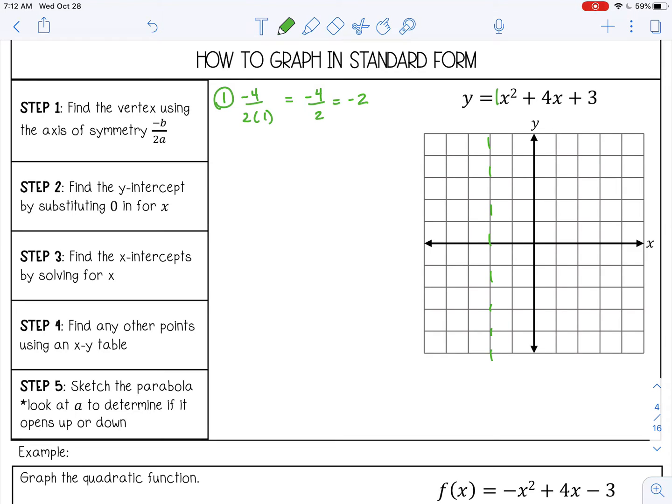Now to find the vertex, we already have the first part, negative 2. We just need to substitute that negative 2 into the equation. So I'm just taking this value and substituting it in for x, and that will give you the y-coordinate. Negative 2 squared, that's 4. 4 times negative 2, that's negative 8. Plus 3, that gives me negative 1. So my vertex is negative 2, negative 1. Go ahead and plot that.